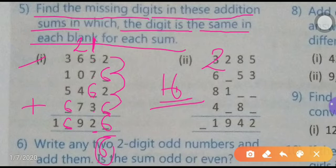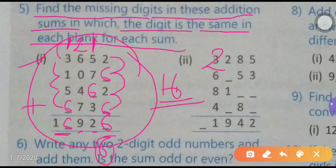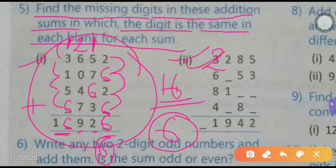Continuing the verification: 5+7=12, 12+3=15, 15+1 carry=16 — six comes, carry one. Then 6+2=8, 8+4=12, 12+7=19 — nine comes, carry one. 3+1=4, 4+1=5, 5+5=10, 10+6=16. All sums satisfy with six in the blanks. So the answer is six.